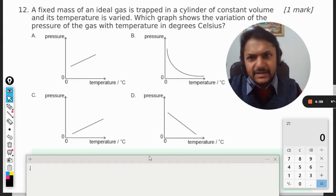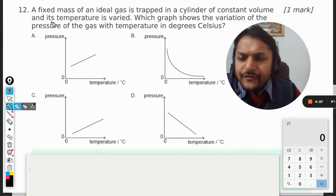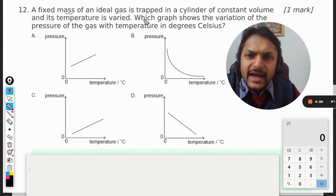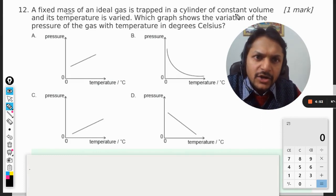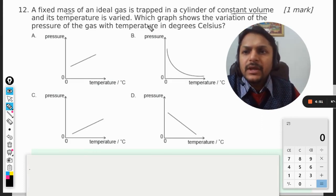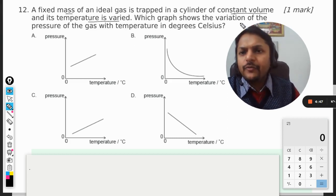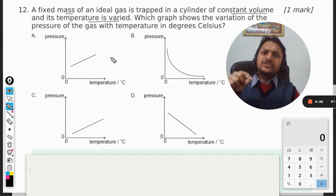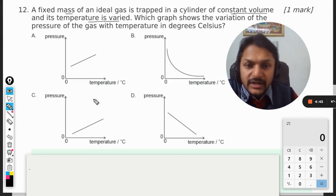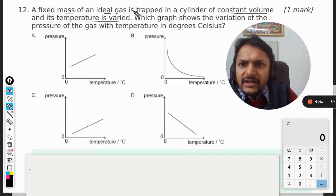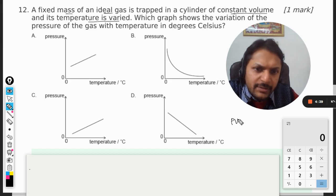Okay, let us see what is there in this question. A fixed mass of ideal gas is trapped in a cylinder of constant volume and its temperature is varied. Which graph shows the variation of pressure of the gas with temperature in degrees Celsius?